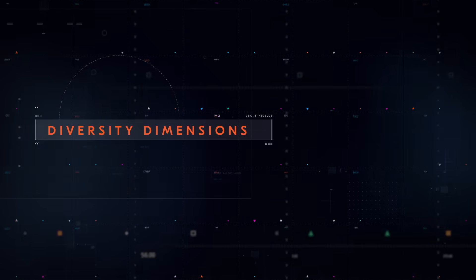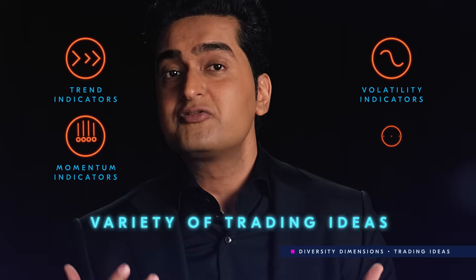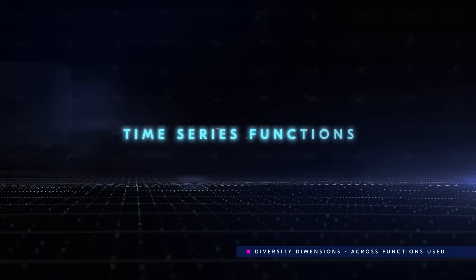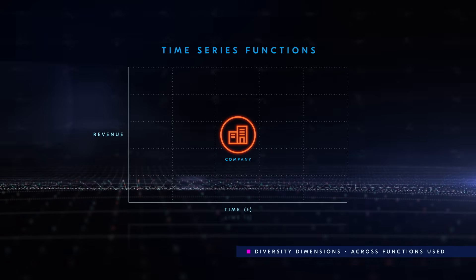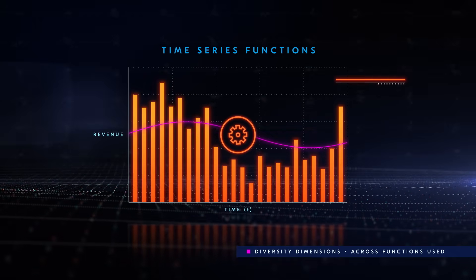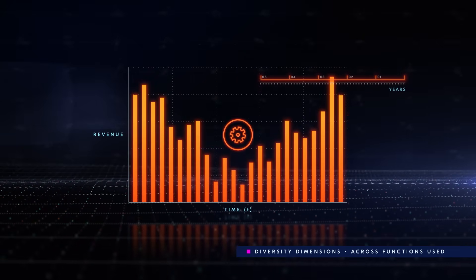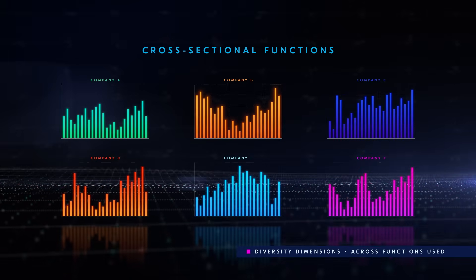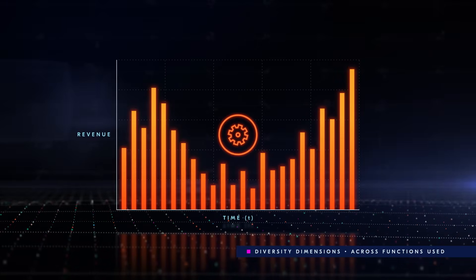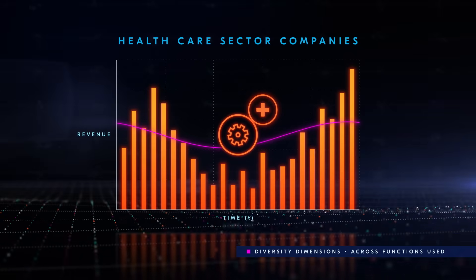There are many dimensions as to how you can diversify your alphas. Some of them include the variety of trading ideas, the diversity in functions used, like the time series functions or the cross-sectional functions. Time series functions process data from a single company over a span of time — for instance, calculating the average revenue of a company over the past 5 years. On the other hand, cross-sectional functions analyze a snapshot of data from multiple companies at a specific point in time. An example would be calculating the average revenue of healthcare sector companies in the current month. Let's try these ideas out.